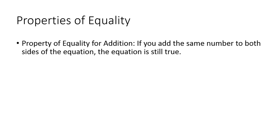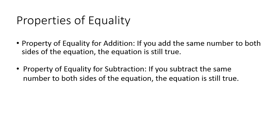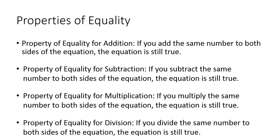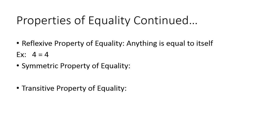Next we have the properties of equality, which we'll mainly be using when solving equations. The addition property of equality: if you add the same number to both sides of the equation, the equation is still true. The subtraction property of equality: if you subtract the same number from both sides, the equation is still true. The multiplication property of equality: if you multiply the same number to both sides, it's still true. The division property of equality: if you divide both sides by the same number, the equation is still true.